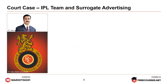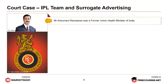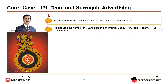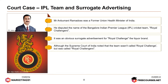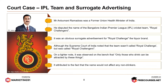A court case involving an IPL team and surrogate advertising: Mr. Ramdas, a former Union Health Minister of India, disputed the name of Bangalore's Indian Premier League cricket team, Royal Challengers. It was considered an obvious surrogate advertisement for Royal Challenge, the liquor brand. However, the Supreme Court of India noted that the team wasn't called Royal Challenge, but Royal Challengers. On a lighter note, it was observed on the bench that only those who drink can be attracted by these things, attributing to the fact that the name would not affect non-drinkers.